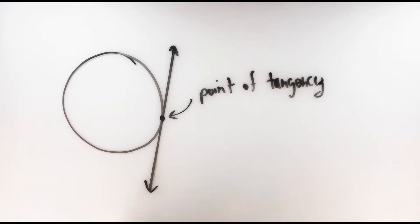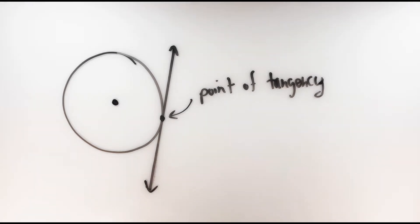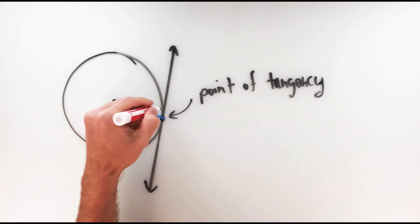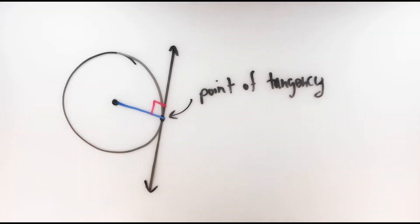The main problem-solving tool we're going to utilize is that a radius drawn to a point of tangency must always be perpendicular to that tangent line. This opens up many different types of problems once we introduce that right angle — think right triangles. The converse is also true: if a line is perpendicular to a radius at the endpoint on the circle, then that line has to be tangent to the circle.